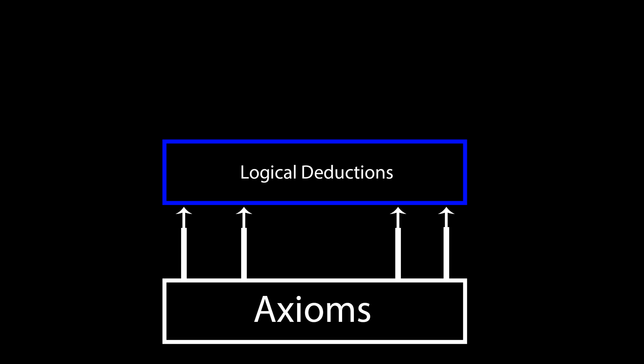An axiom is just some logical statement that we assume to be true. And then from that, we can go on to deduce logical results that follow directly. There are four axioms that need to be satisfied by the set and the binary operation to form a group.